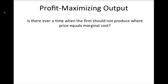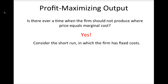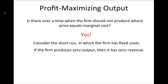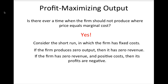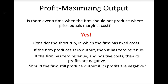Is there ever a time when the firm should not produce where price equals marginal cost? The answer is yes. There are two cases to consider: the short-run case and the long-run case. We will start by considering the short-run case when the firm has fixed costs. This means that even if the firm produces zero units of output, it still has to pay some costs. If the firm produces zero output, it will have zero revenue. If it has zero revenue but positive costs due to its fixed costs, then its profits will be negative.